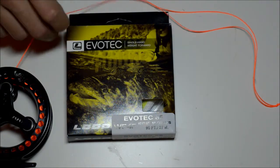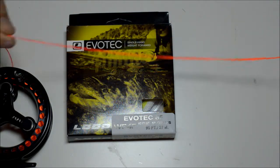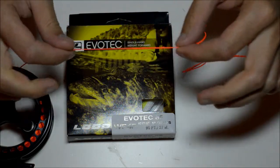Okay, so now I am going to show you how to get a nice loop-to-loop knot-free connection from your backing to your fly line. As you can see there are no knots here.